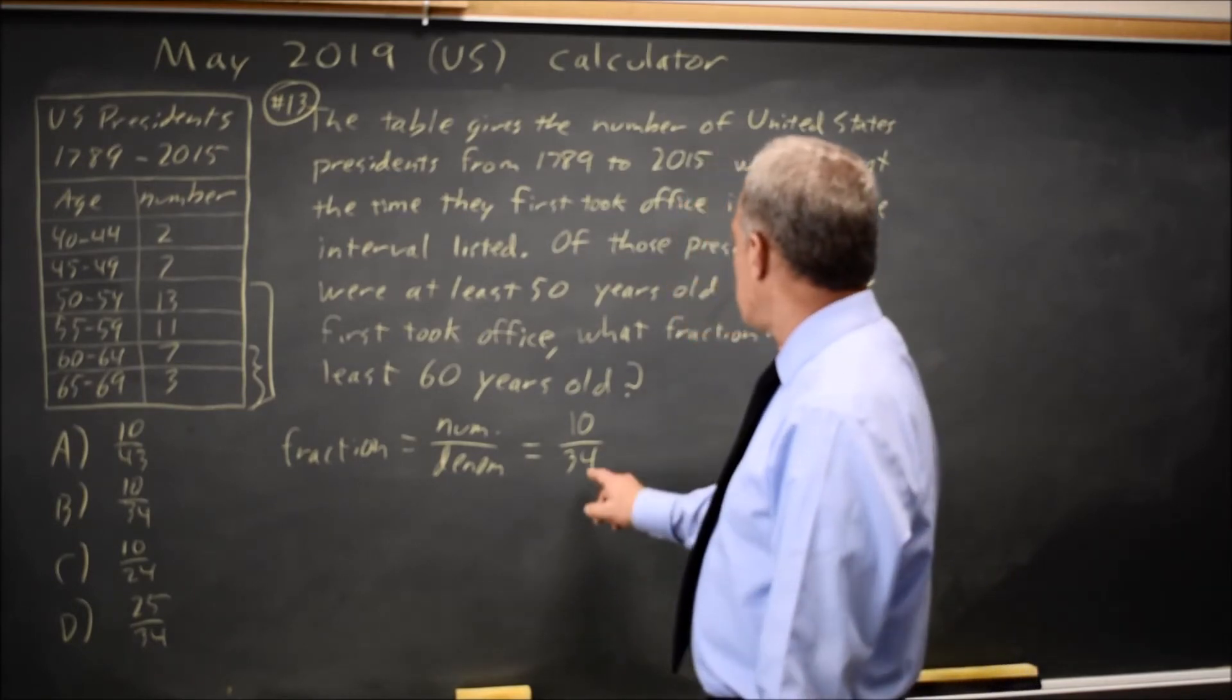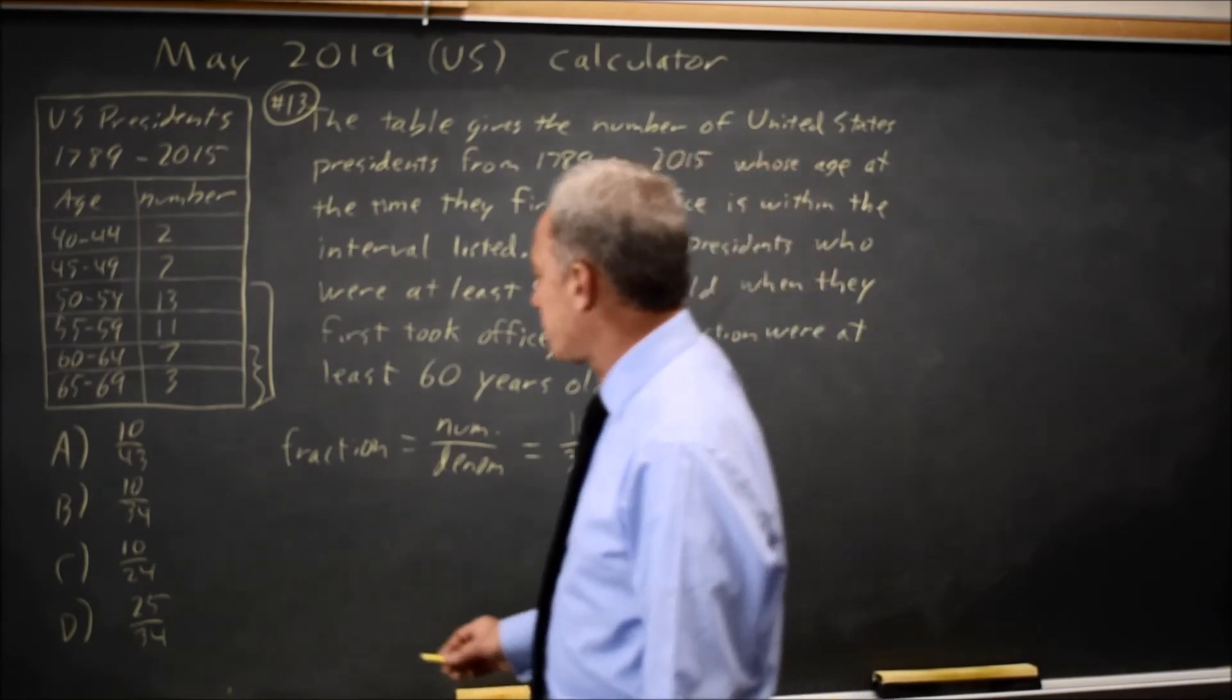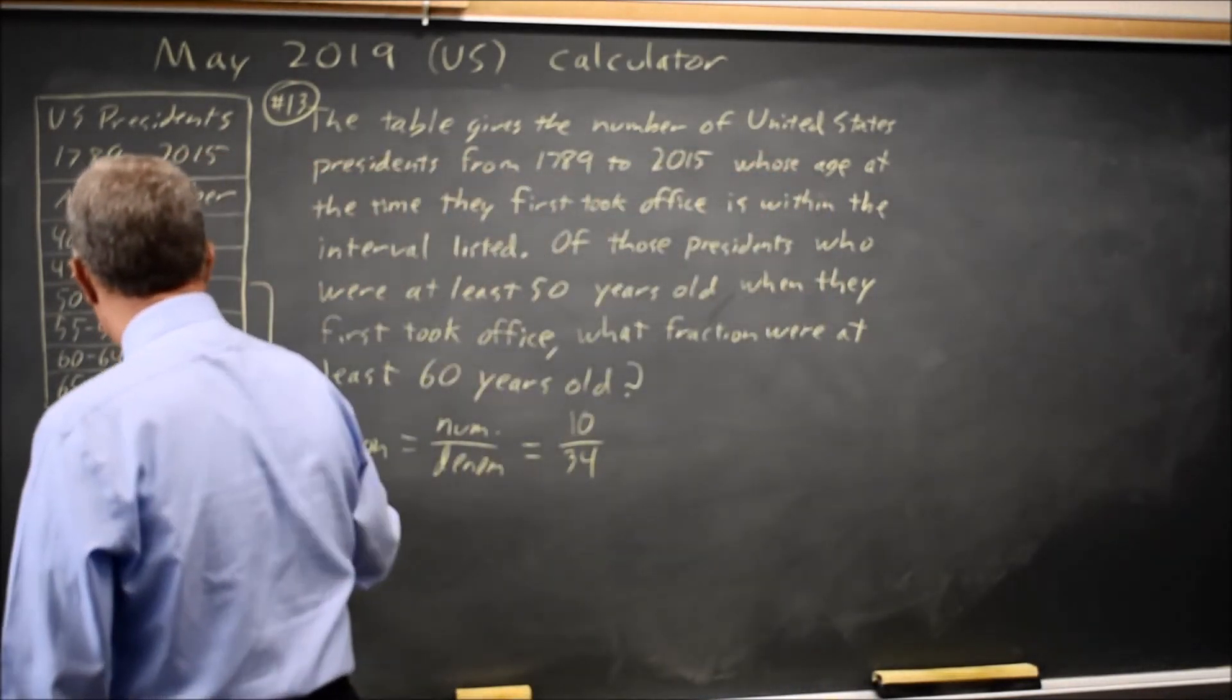But in this case, it's a little simpler, but it's still the same process. The answer is 10 out of 34, and they're nice enough not to make us simplify, so that would be choice A.